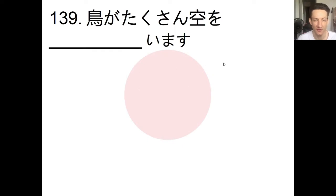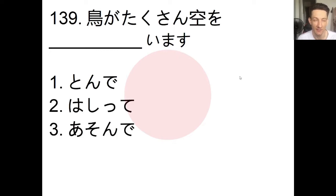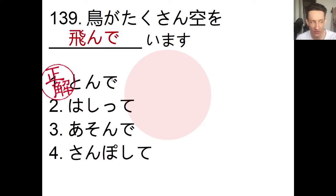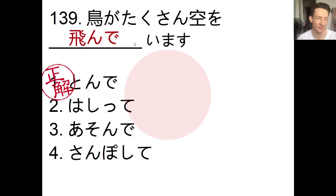Now let's look at our vocabulary. Fill in the blank: tori ga takusan sora wo __ imasu — the choices are tonde, hashitte, asonde, or sanpo shite. Pause the video, choose an answer, and we'll check. The answer is tonde. Tori ga takusan sora wo tonde imasu — many birds are flying through the sky. Tori means bird, takusan means many, sora means sky.